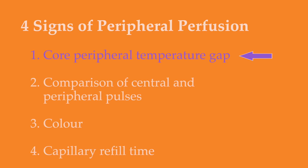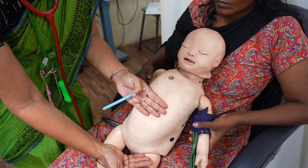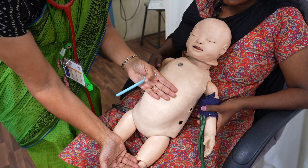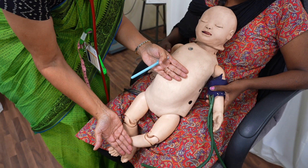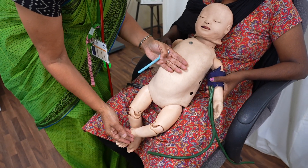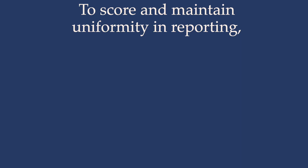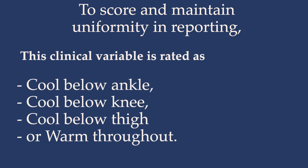The first sign is the core-peripheral temperature gap. This sign is based on comparison of temperature felt between the core and the limbs. To score and maintain uniformity in reporting, this clinical variable is noted as cool below ankle, knee, thigh, or warm throughout.